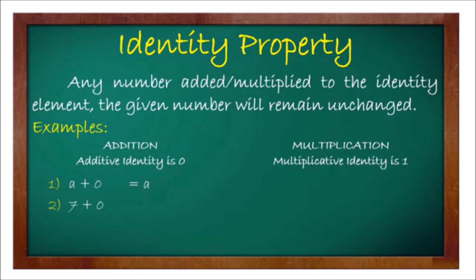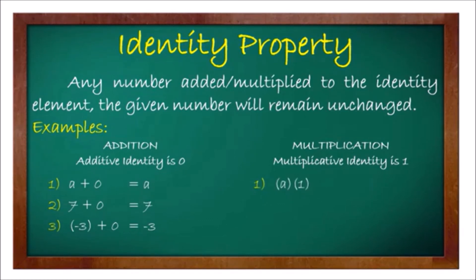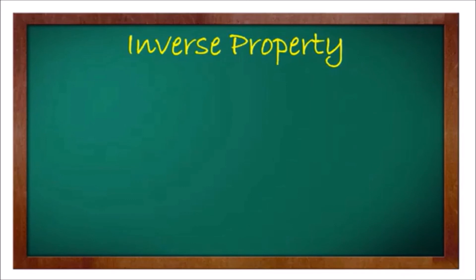Examples under the identity property: for addition — a plus 0 equals a; 7 plus 0 equals 7; negative 3 plus 0 equals negative 3. For multiplication — a times 1 equals a; 2 times 1 equals 2; negative 4 times 1 equals negative 4.